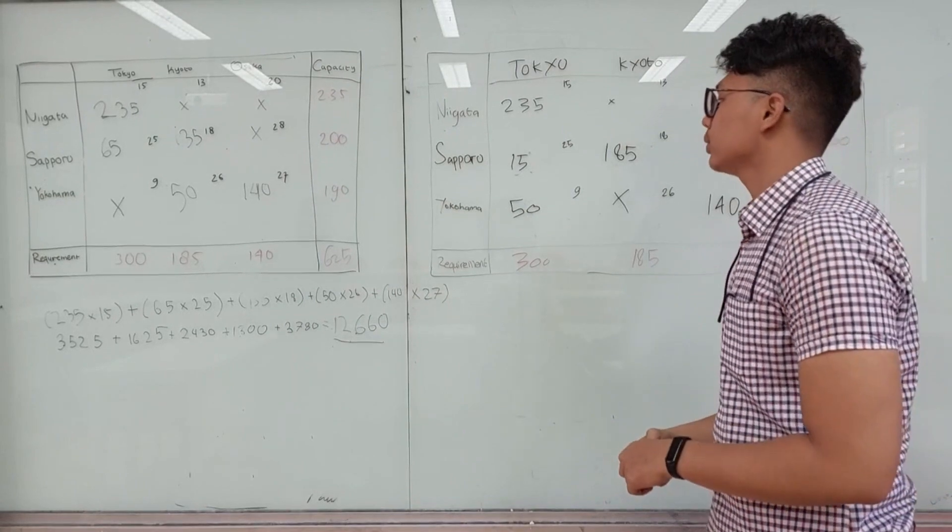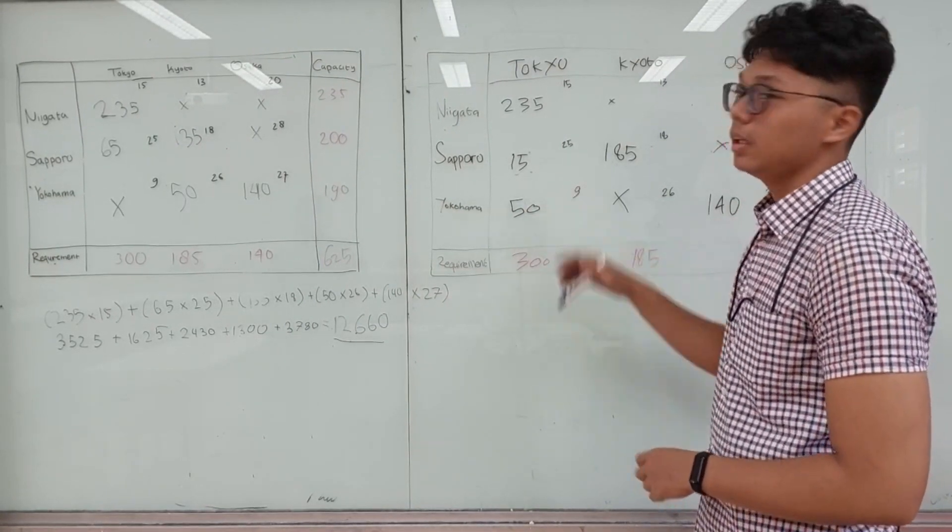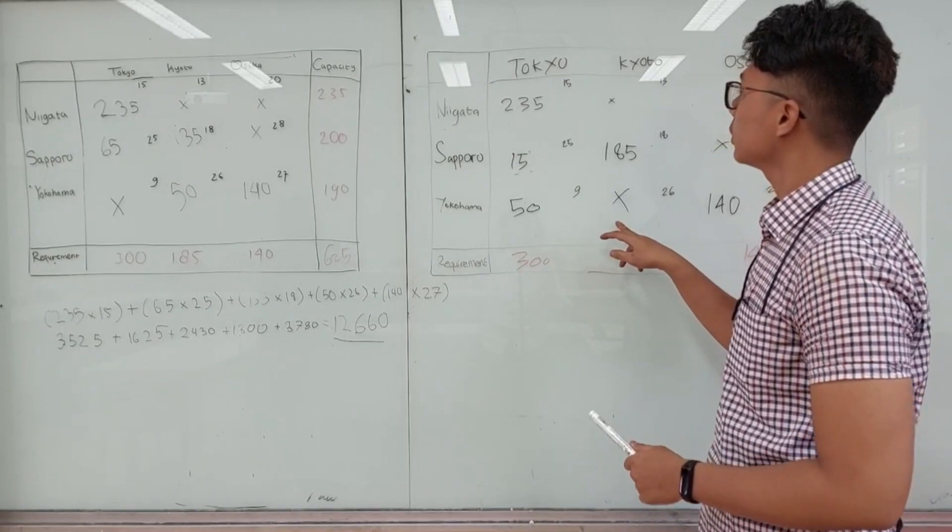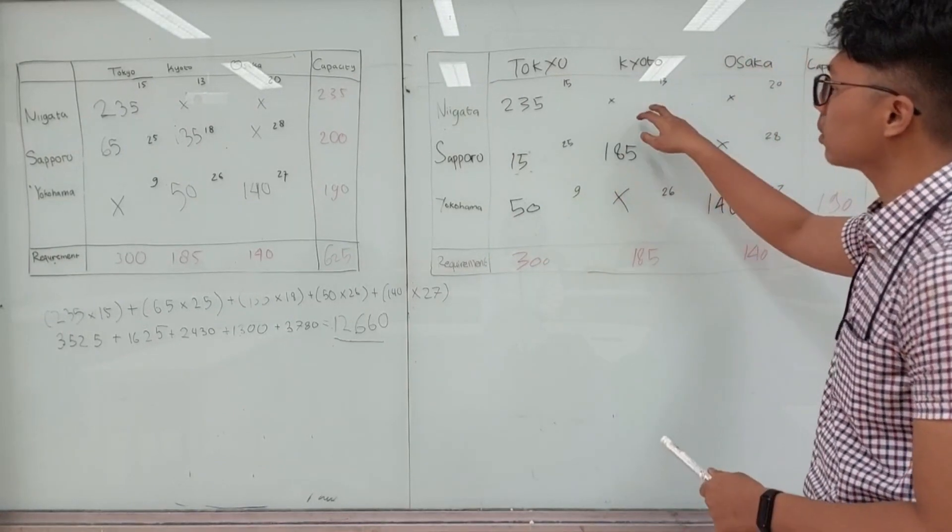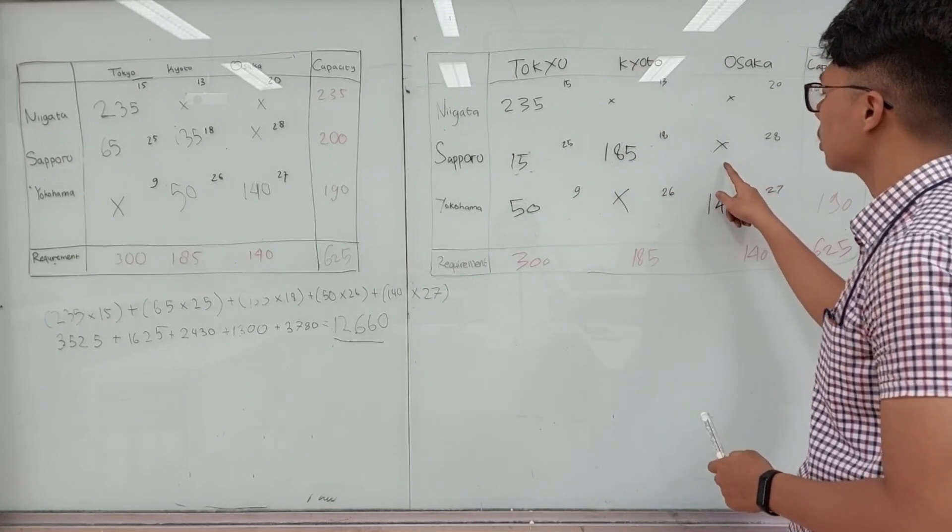Okay guys, after we find the new value from YT and etc, there is a new river. As you can see, it's Yokohama-Kyodo, Nigara-Kyodo, Nigara-Osaka, and Sapporo-Osaka.